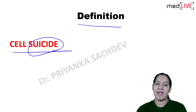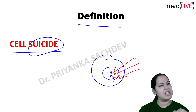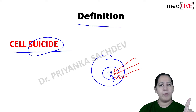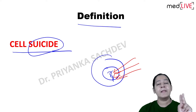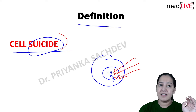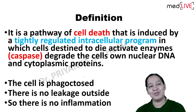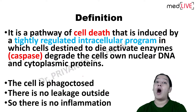The second situation is when the DNA of this cell is damaged due to physical, chemical, or biological carcinogens - damaged to such an extent that it cannot be repaired anymore. In these two situations: either the cell is not required in the body or the DNA is damaged beyond repair, the cell will die by itself. That is the cell will do suicide.